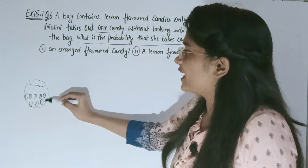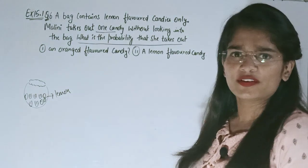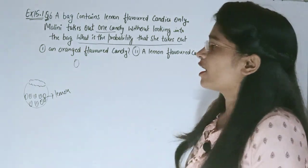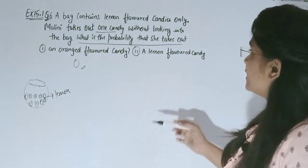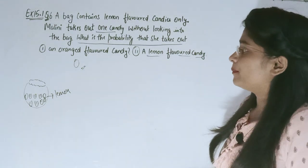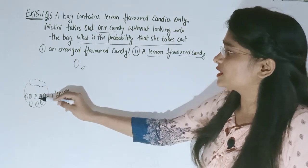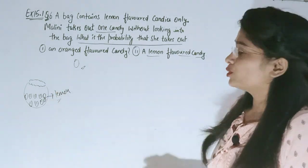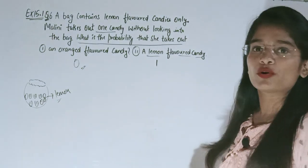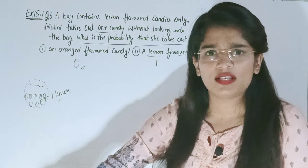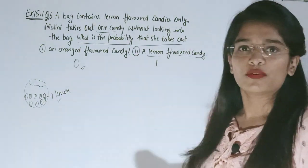All the candy are lemon flavor — no orange flavor. So what is the probability of picking an orange candy? And for lemon flavor candy, we have seen that it is one, and all the candy is lemon, so it is definitely sure — 100%. Whatever candy you pick will be lemon, so the answer is one.